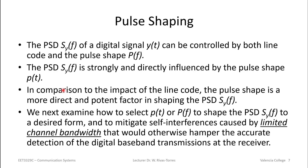We'll examine how to select p(t) or p(f) to shape the pulse such that we mitigate effects caused by limited channel bandwidth. We want to address the concept of inter-symbol interference. If we do nothing and just try to send square pulses, we would have problems with detection — this would hamper the detection of the digital baseband signal at the receiver.